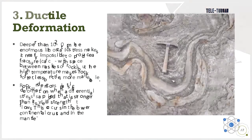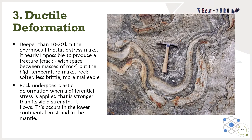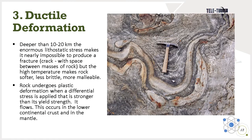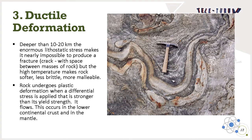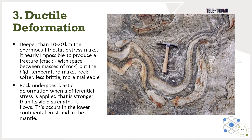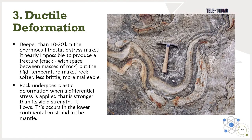And third, we have ductile deformation. Deeper than 10 to 20 kilometers, the innermost lithostatic stress makes it nearly impossible to produce a fracture or crack with space between masses of rock. But the high temperature makes rocks less brittle and more malleable. Rock undergoes plastic deformation when a differential stress is applied that is stronger than its yield strength — it flows. This occurs in the lower continental crust and even in the mantle.